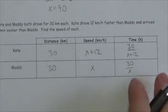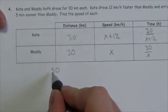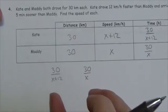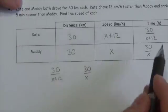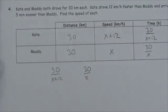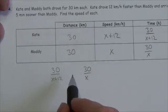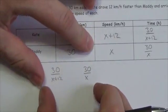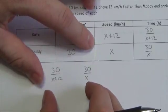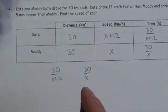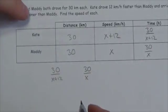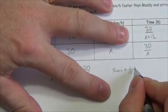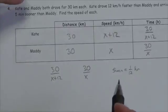Kate's time is 30 over (x plus 12) and Maddie's time is 30 over x. There is a five-minute difference between them, but here's the problem: speed is in kilometers per hour, so five minutes must be converted. Five minutes equals 5 over 60 hours, which reduces to 1/12 of an hour.